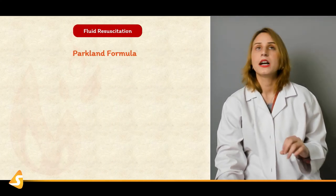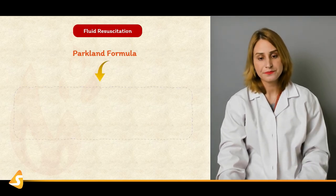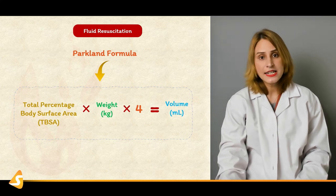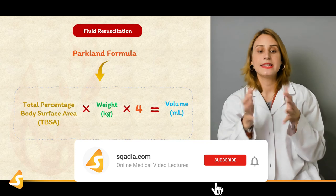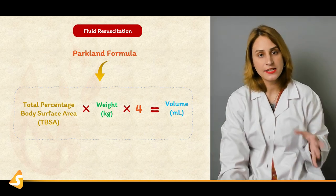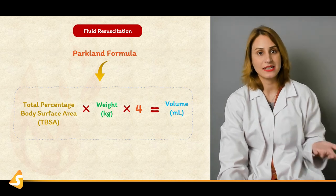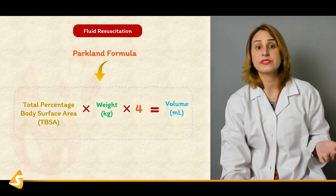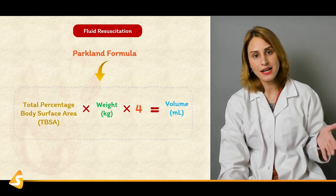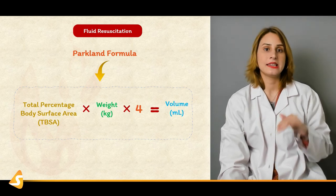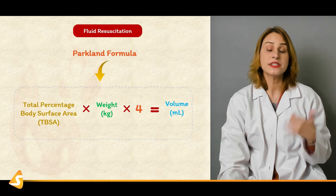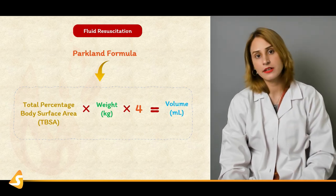The other formula is the Parkland formula, most commonly used for crystalloid solutions. It is: TBSA (calculated by Rule of Nines) × weight × 4 = total volume for 24 hours. Half of that volume should be replaced in the first 8 hours, and the remaining half in the next 16 hours. So if the volume is calculated to be 2000 ml, one liter would be given in the first 8 hours and the remaining one liter in the next 16 hours. That's how volume is calculated using the Parkland formula. Remember, it is for crystalloid solutions. For colloids, we use the Muir and Barclay formula.